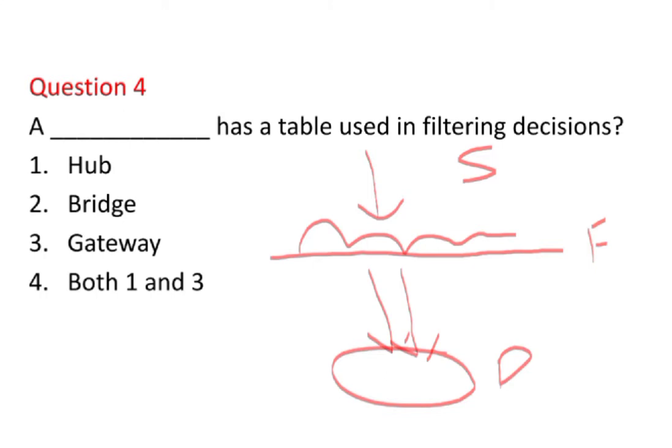So the right answer to which device has a table used in filtering decisions is bridge. This is a very important question to remember.